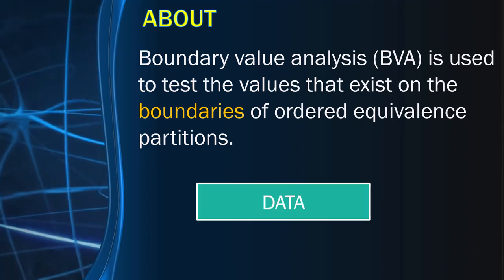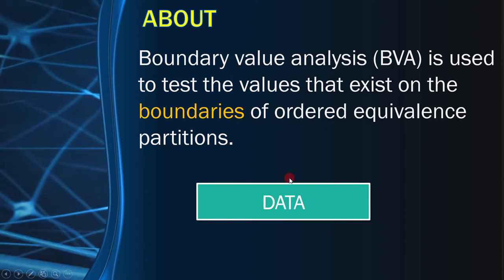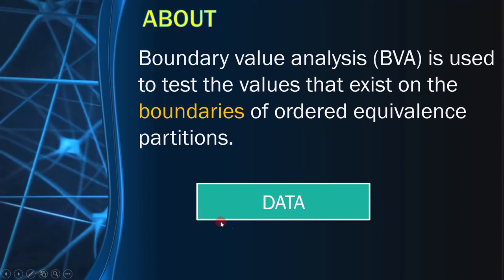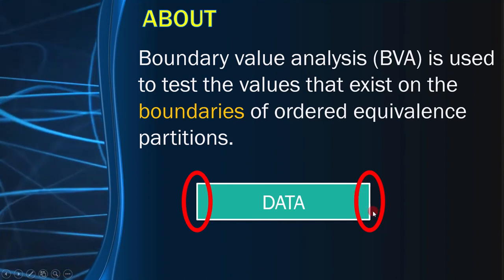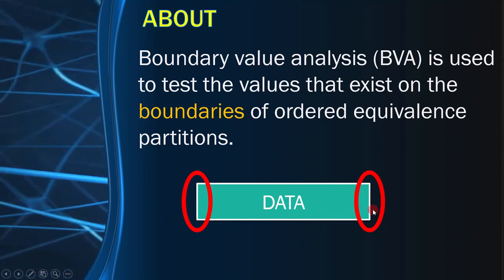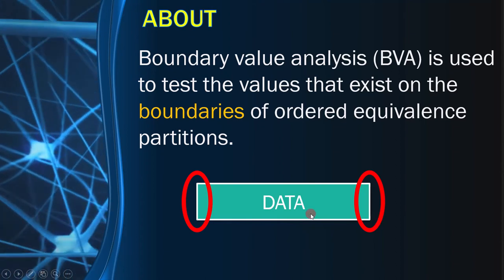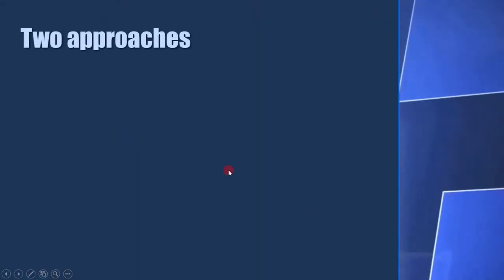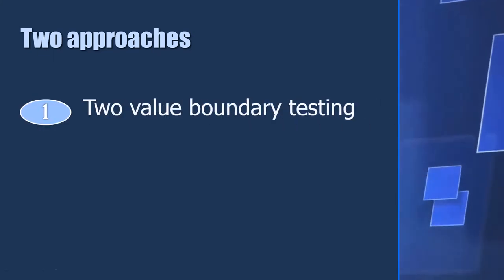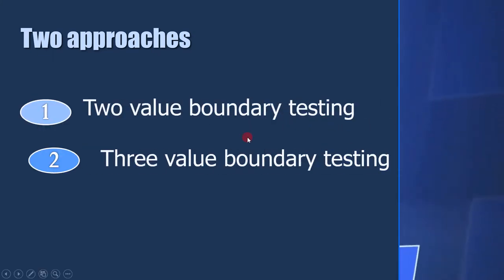Let's understand this. Suppose you have a set of data, then at the boundary, you have to apply the boundary value analysis. Before going further, you need to know that there are two approaches by which we can apply boundary value analysis. First is two-value boundary testing and second is three-value boundary testing. If nothing is mentioned, then you have to apply two-value boundary testing.